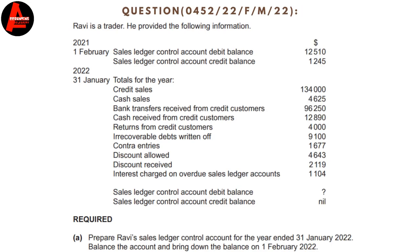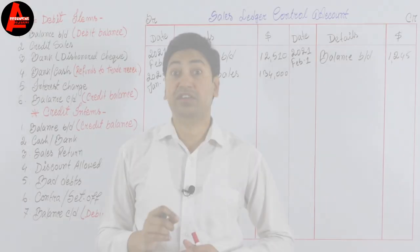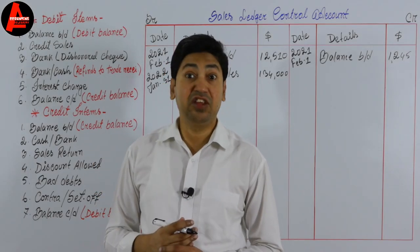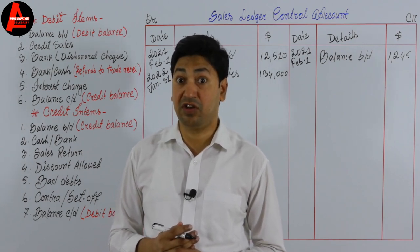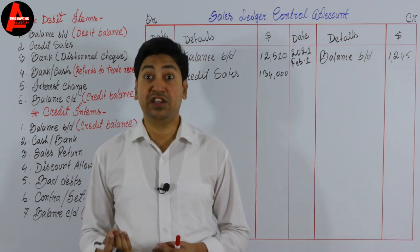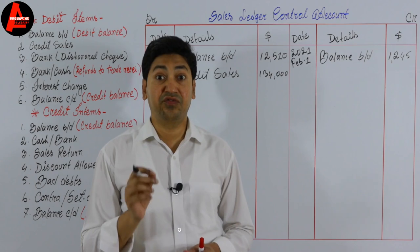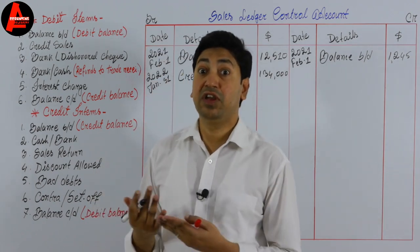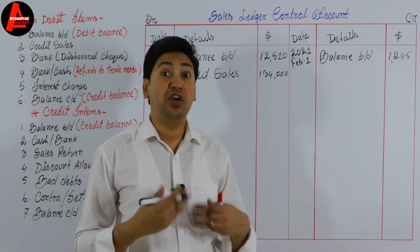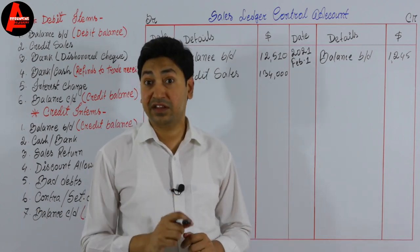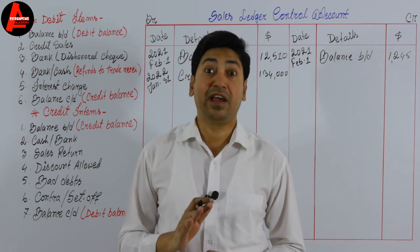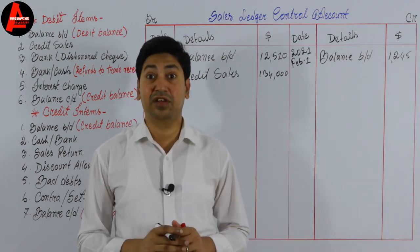The next item is cash sales of $1,625. Cash sales cannot come on this account — they will be recorded in the cash book, not in the sales ledger control account. This item is given in the question just to confuse you and check your understanding. Many students mistakenly include cash sales here, but that is incorrect. Never write cash sales on this account.